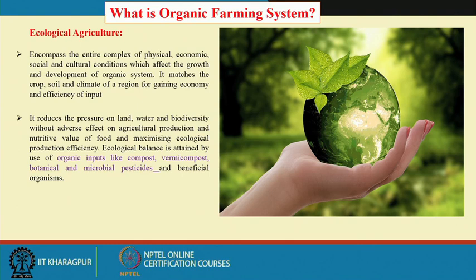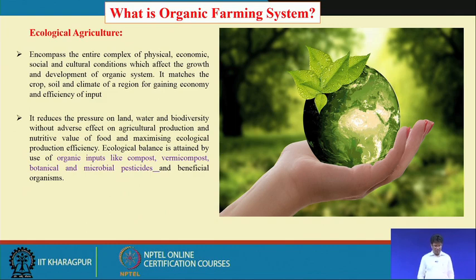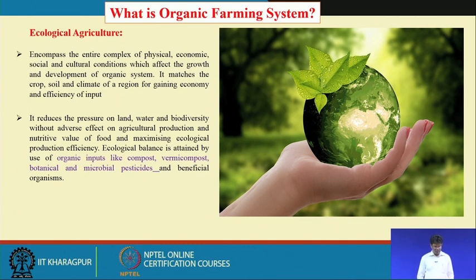Ecological agriculture matches the crop, soil and climate of a region for gaining economic efficiency of inputs. It reduces the pressure on land, water and biodiversity without adverse effects on agricultural production and nutritive value of food, while maximizing ecological production efficiency. Ecological balance is attained by use of organic inputs like compost, vermicompost, botanical and microbial pesticides, and beneficial organisms.